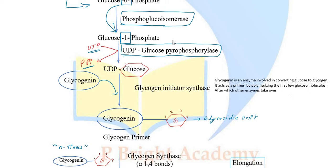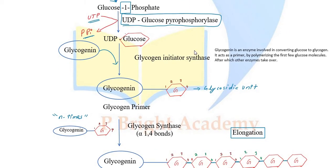The enzyme glycogenin is involved in initiating glycogen synthesis. Glycogenin is a primer — it acts as the starting compound. Glycogenin uses UDP-glucose to form the initial glycosidic linkage, starting the glycogen chain.